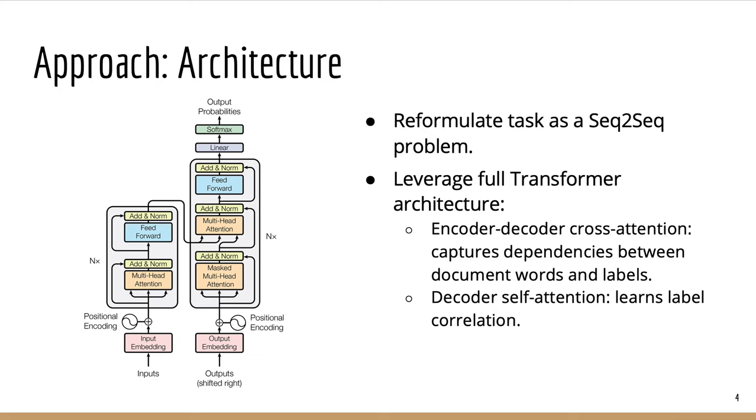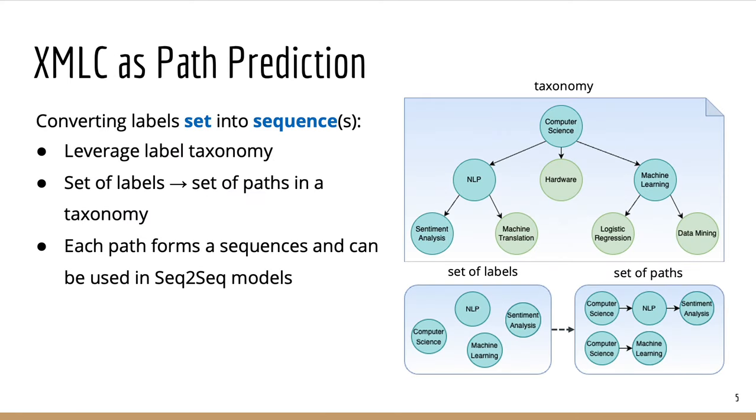And the only problem is how to reformulate multi-label classification as a sequence-to-sequence task. So we have a sequence as input, this is the document, but the question is how to represent labels as a sequence. And to do this, we are leveraging our taxonomy, our hierarchy of labels, and we convert the unordered set of labels into the set of paths in the taxonomy. Paths actually represent sequences, so they can be used as output sequence in our sequence-to-sequence model.